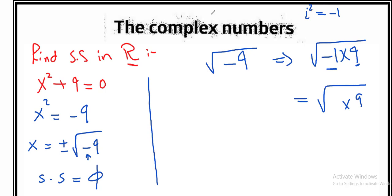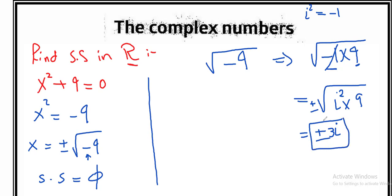What is the meaning of i? Imaginary number. So I will replace -1 with i². Now we find the answer: ±√(i² × 9) = ±i√9 = ±3i. So the result will be ±3i. Here I find an answer in imaginary number. This number is called a complex number — a number with the letter i is called a complex number. We use complex numbers to find the answer for a negative under the root.